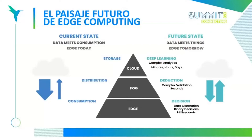El cloud conocido actualmente migrará hacia un data center gigantesco donde se usará para deep learning, analytics y analíticas complejas que pueden durar minutos, horas o días. Lo que muchas empresas llaman la neblina son los data centers intermedios que hacen deducciones y validaciones complejas en segundos. Y los data centers de borde son los que generan decisiones binarias, instantáneas, en milisegundos.